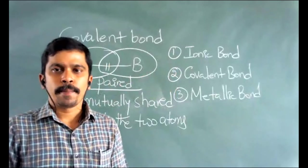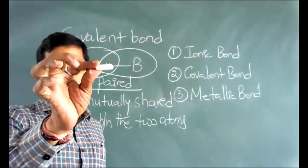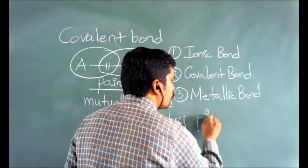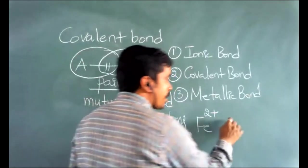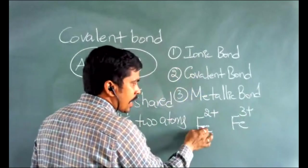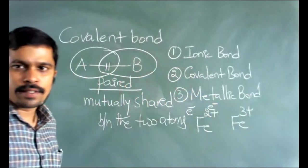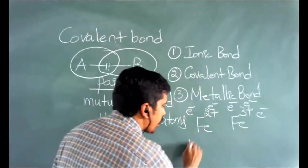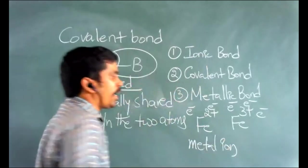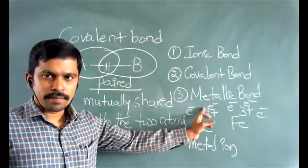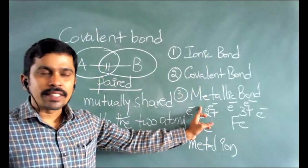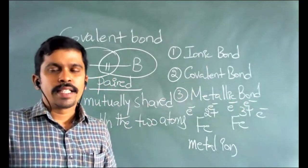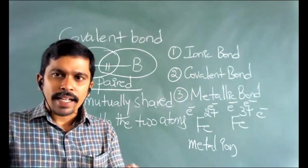Suppose you take a piece of iron metal. This piece contains iron atoms and electrons. Iron exists in Fe2+ state as well as Fe3+ state. Around Fe2+ there are two electrons, around Fe3+ there are three electrons in its valence shell. These are metal ions. The attraction between metal ions and electrons is called a metallic bond.